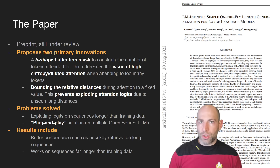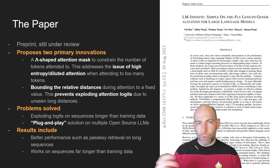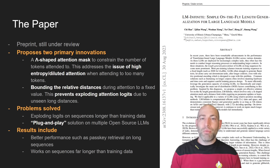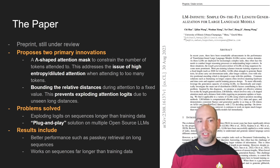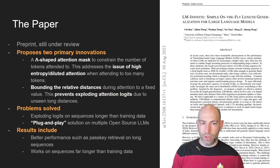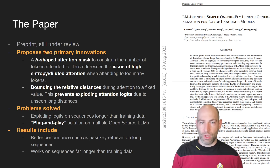The long story short is this paper proposes two primary innovations. The first is a lambda-shaped attention mask, which constrains the number of tokens that it needs to attend to. This addresses the issue of high dilution over time, particularly with large context windows — and if that doesn't make any sense, don't worry, we're going to unpack it in just a second.